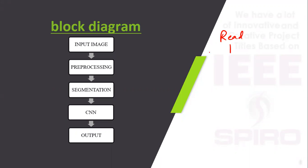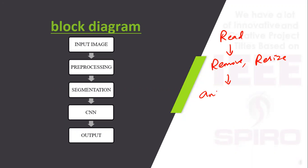Pre-processing means to process the input image — to remove the noises. This comes under pre-processing. Then segmentation means to extract a particular part from the total image. That is called segmentation. Here, segmentation is going to detect the animals. The animal representation means it is going to segment the animal form.